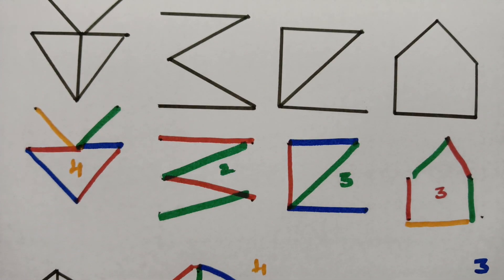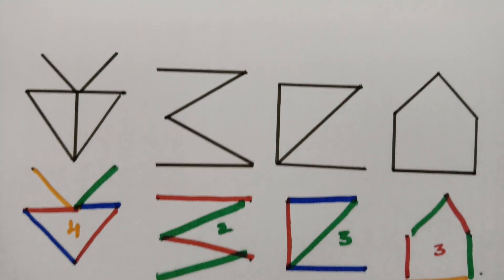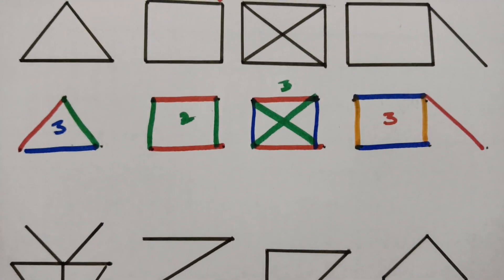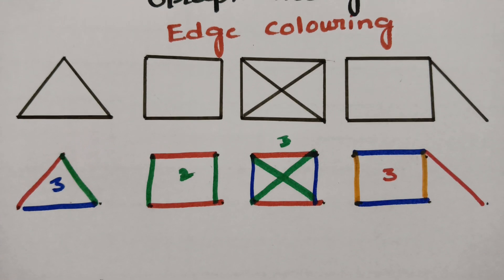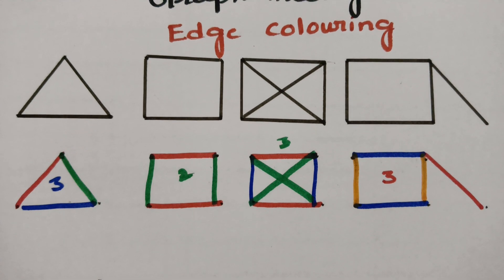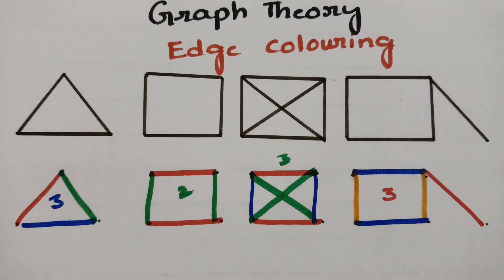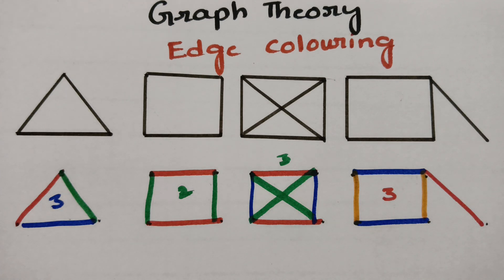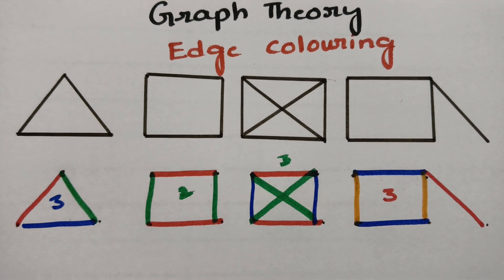This is how we draw edge coloring — no two adjacent edges should have the same color. It is simple to understand; just practice and it will be very helpful. If you like it, please share with your friends, subscribe to the channel for more videos, and check the playlist. Thank you so much.